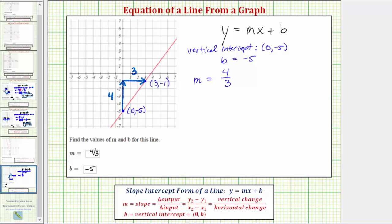So using this formula to keep things organized, let's call this ordered pair x sub one, y sub one, and this ordered pair x sub two, y sub two. Let's just verify we also get four-thirds using this formula. So we'd have m equals y sub two minus y sub one, which would be negative one minus negative five, divided by x sub two minus x sub one, which would be three minus zero.